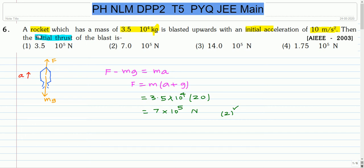This is the first question. A rocket which has a mass of 3.5 times 10 to the power 4 kg is blasted upwards with an initial acceleration of 10 m/s squared. Then the initial thrust of the blasters.